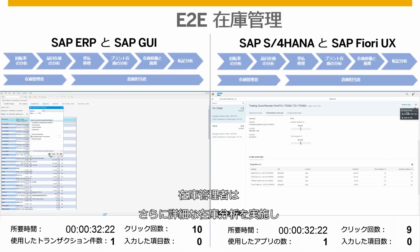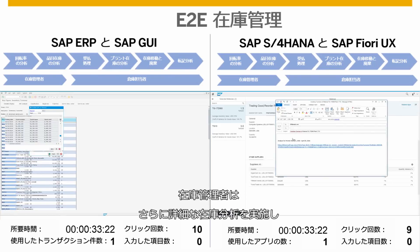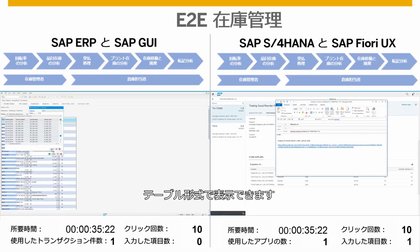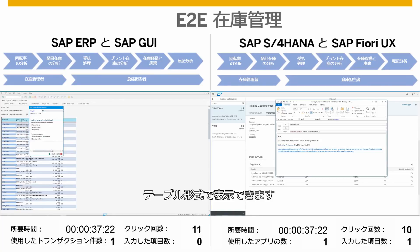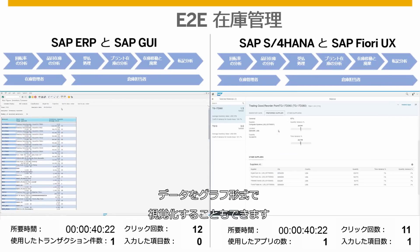The inventory manager can conduct and view further analysis of material stock in table form, according to plants and storage location. Here the manager can also visualize the data in chart form.